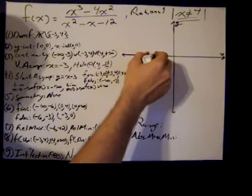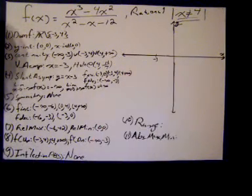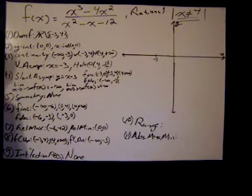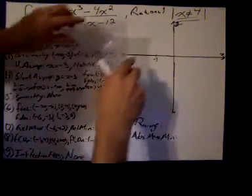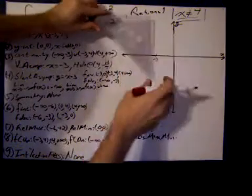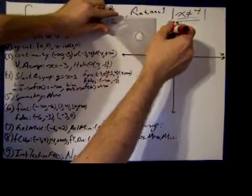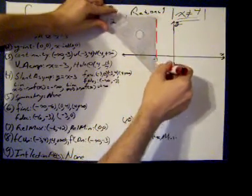So I'm going to put negative 3 right there. And also, if you'll remember, we had a vertical asymptote at x equals negative 3. So I'm going to kind of draw that in because I like to get that in soon. There's my vertical asymptote at x equals negative 3.